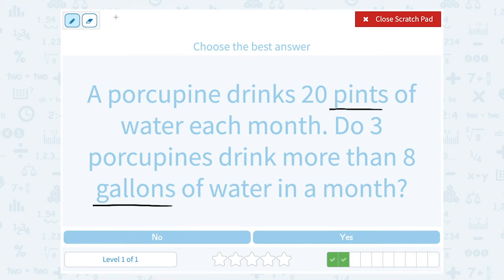So we want to convert. We need to know how many pints are in a gallon. Okay and there's 8 pints in one gallon.